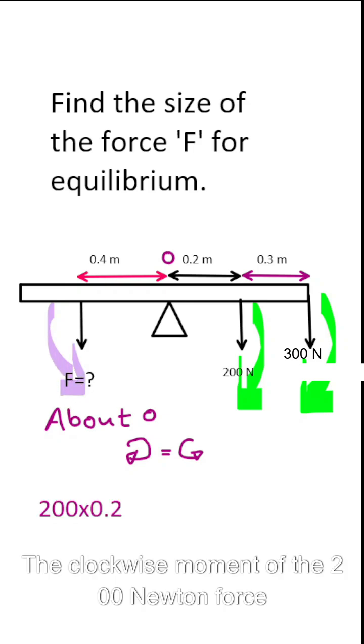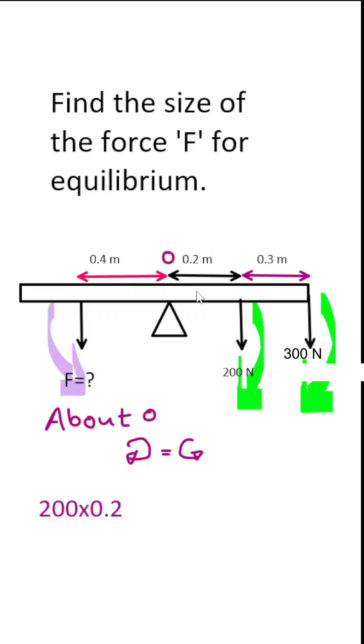The clockwise moment of the 200 newton force is the force 200 multiplied by distance 0.2. Now we have to add the moment of the 300 newton force. So it's force multiplied by distance.